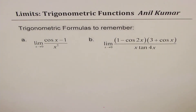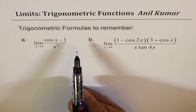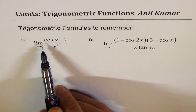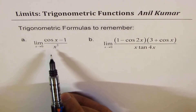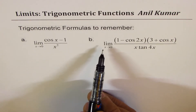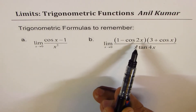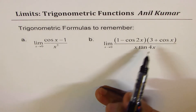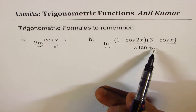I'm Manil Kumar. In this particular video, I'll take two examples and we'll find limits for trigonometric functions. First is to find the limit as x approaches 0 for cos x minus 1 divided by x squared. And then we have limit x approaches 0 for 1 minus cos 2x times 3 plus cos x divided by x times tan 4x.